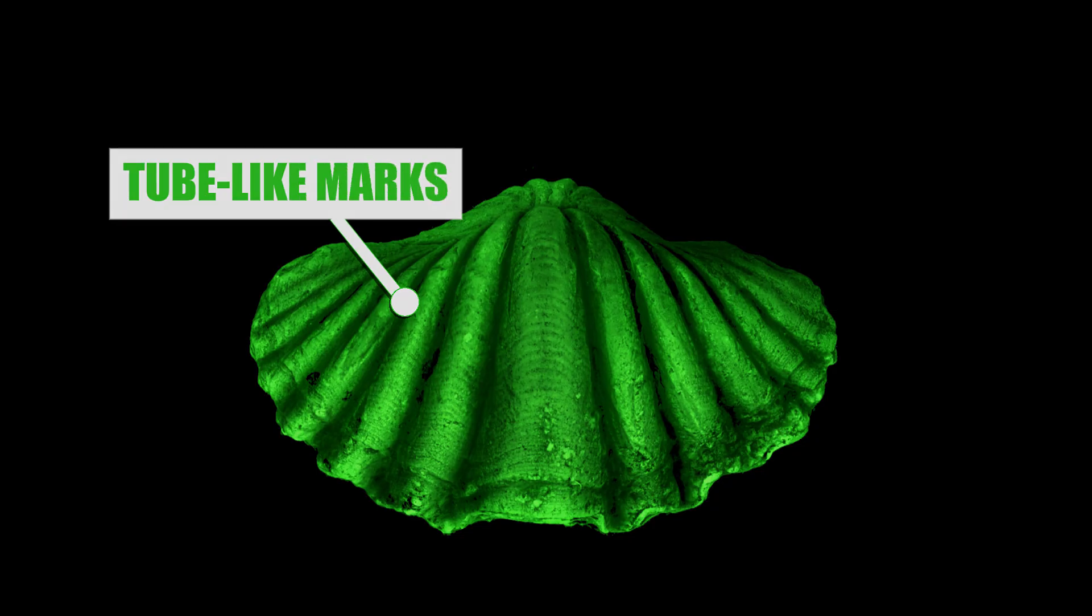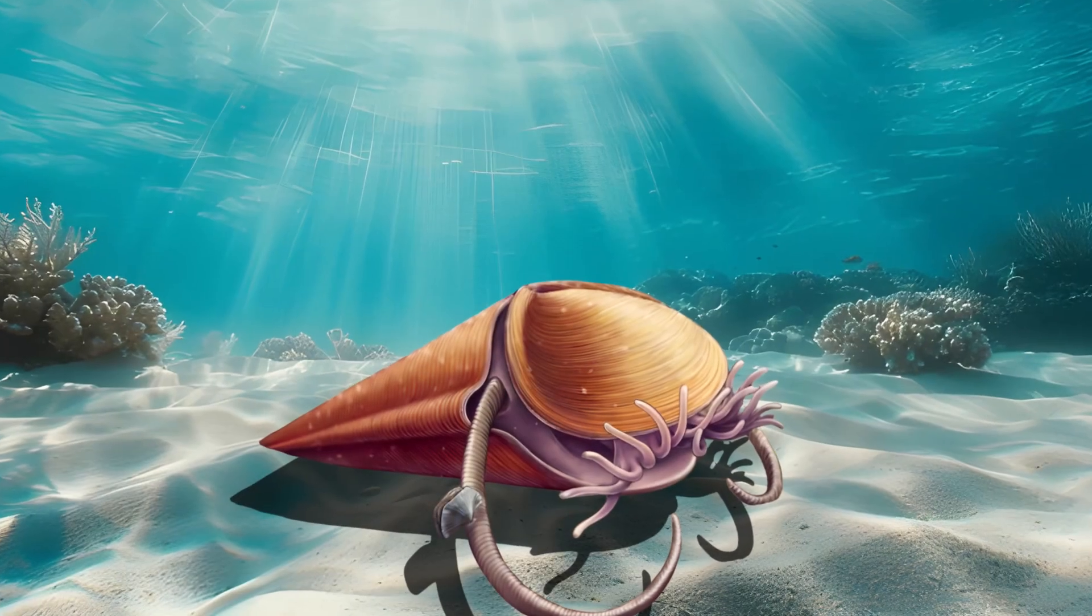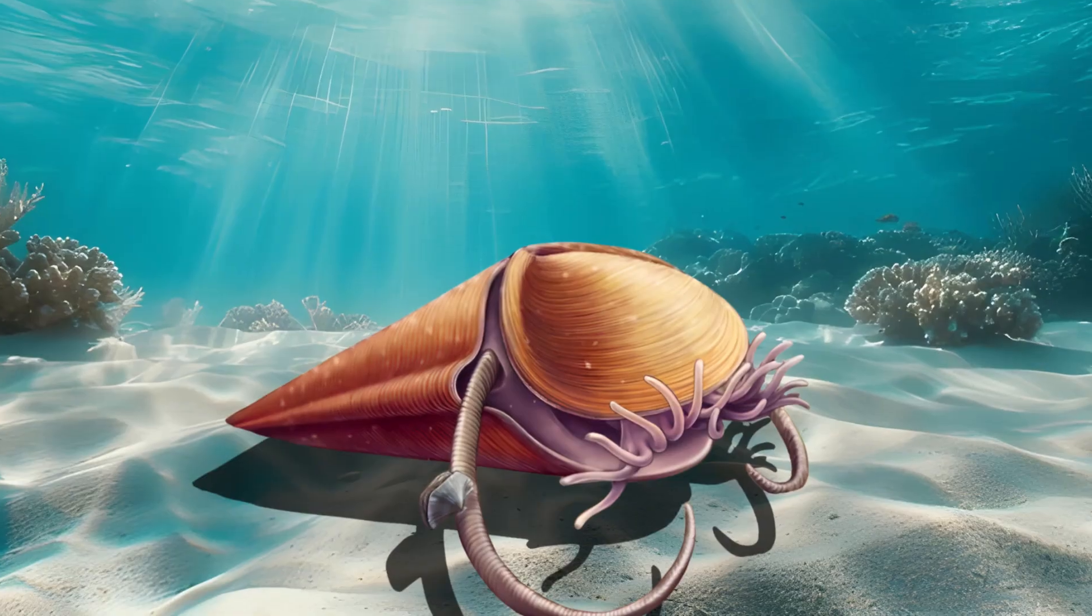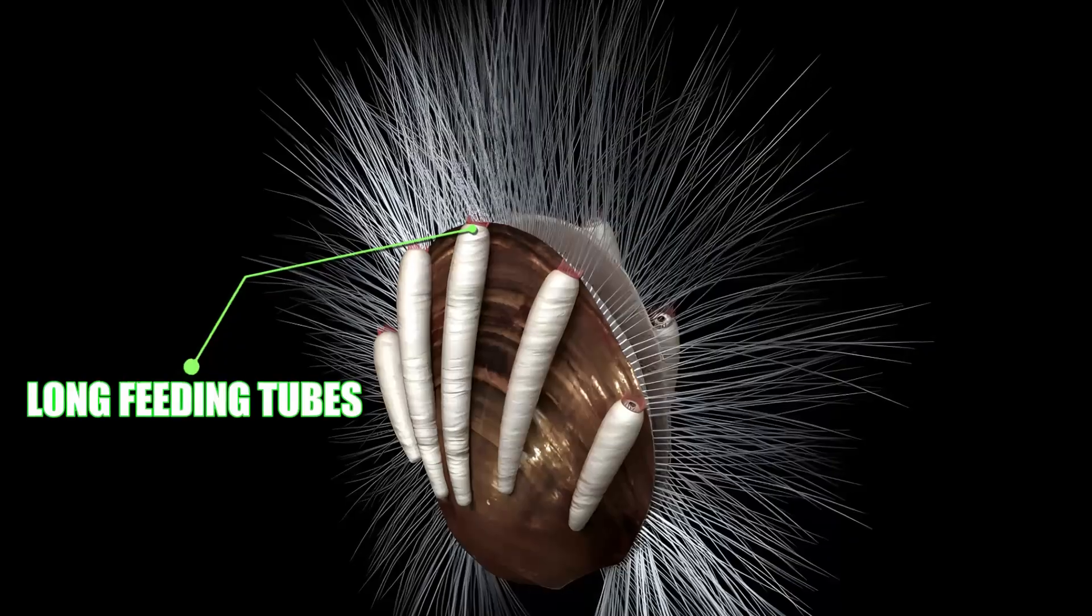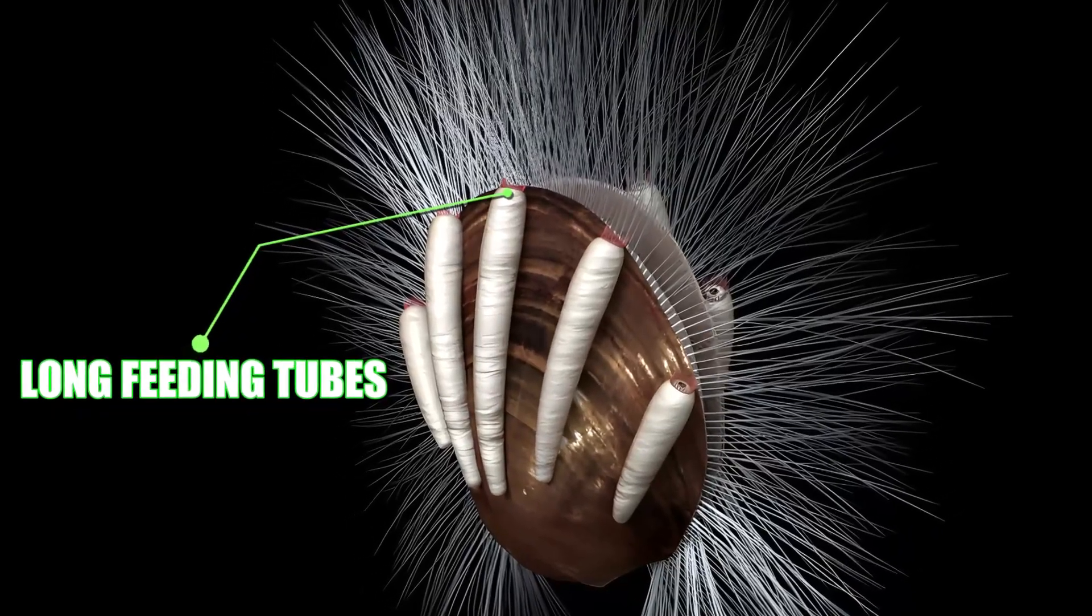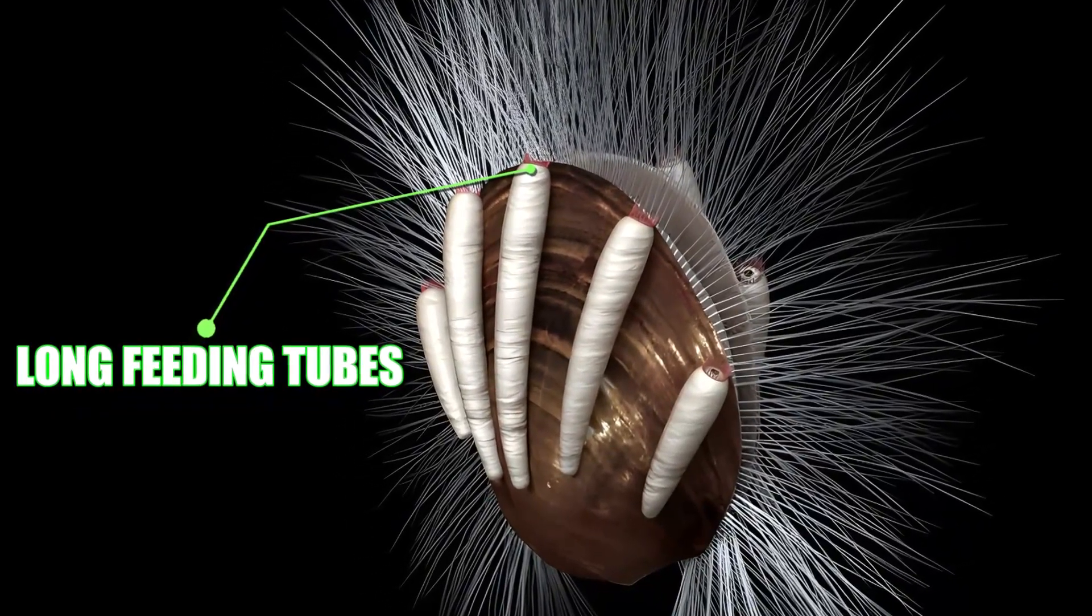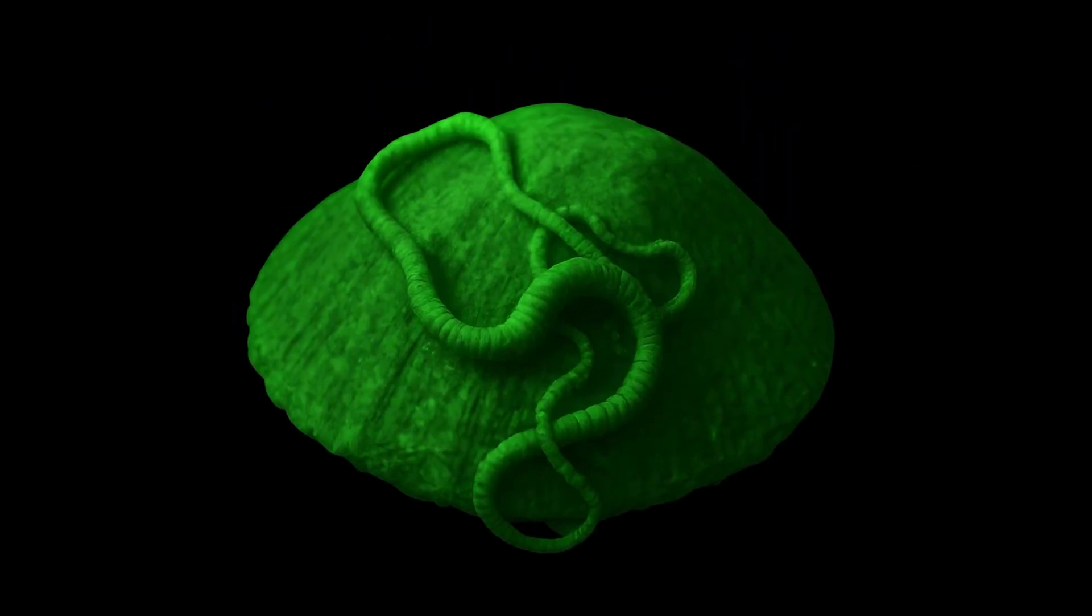Tiny tube-like marks lined the edges. They were signs of parasitic worms that had attached themselves near the mouths of early sea creatures. These worms developed long feeding tubes that allowed them to suck food straight from the host's mouth, while keeping the host alive and functional. The parasite didn't try to kill its host.